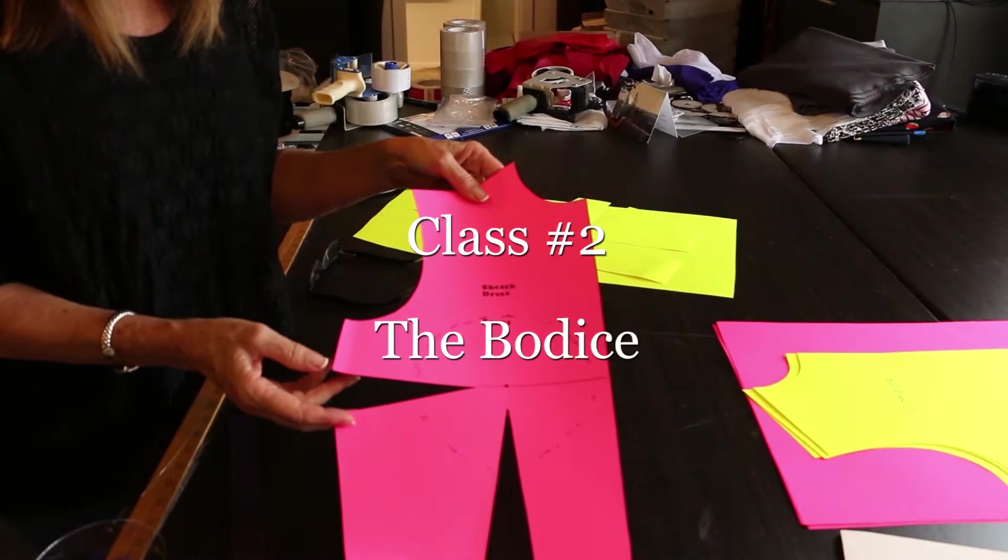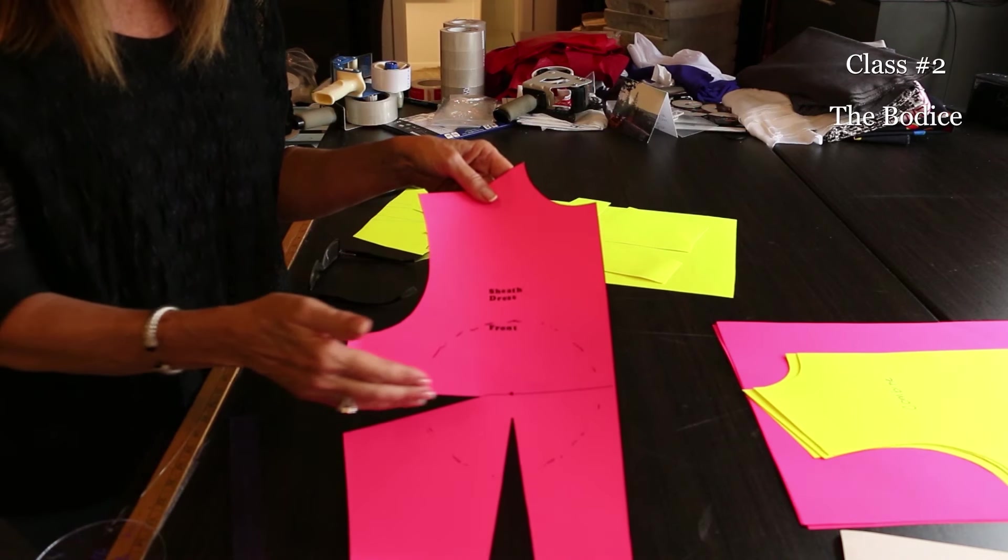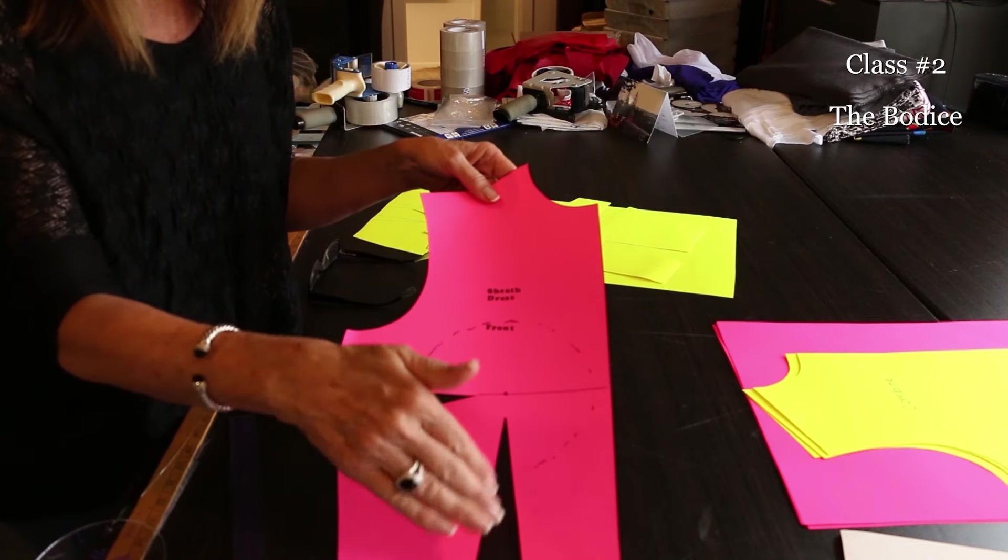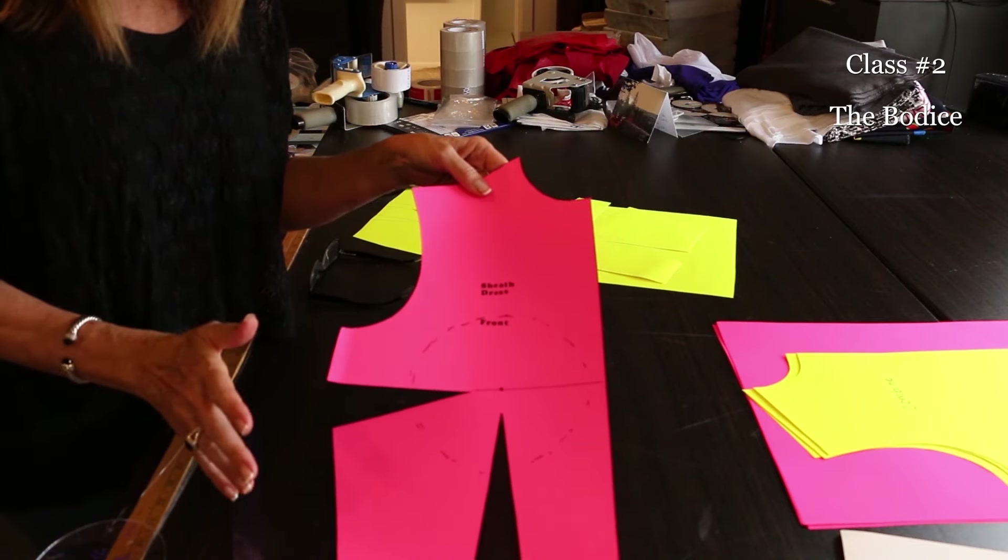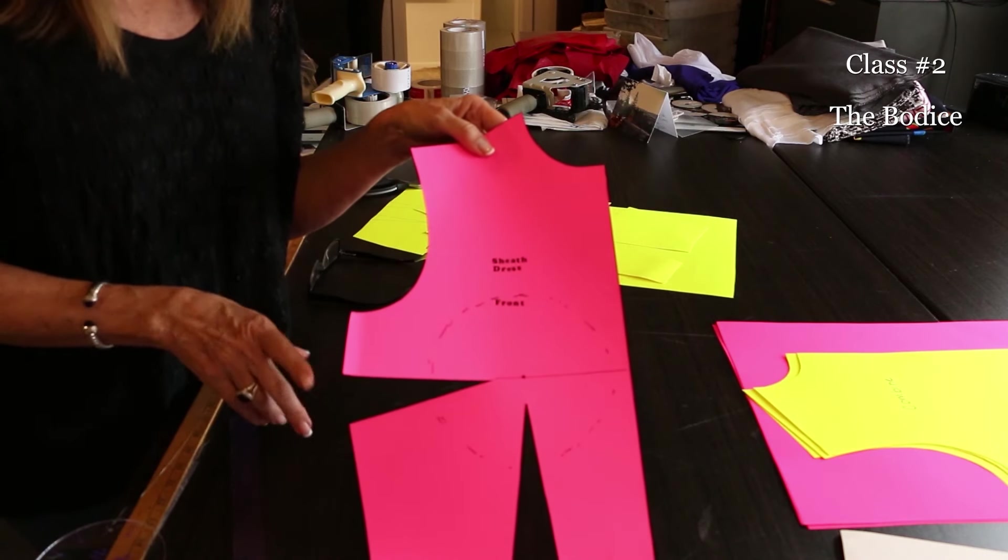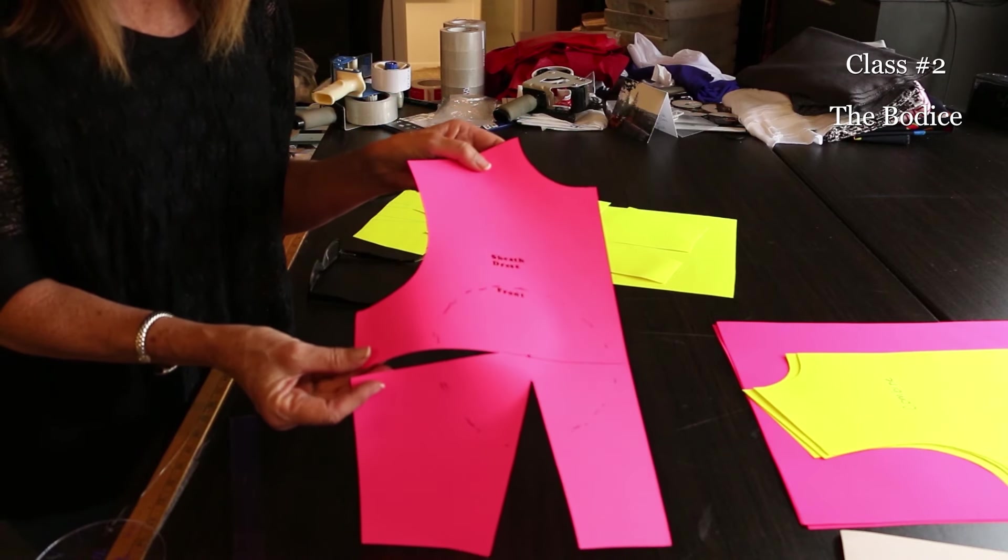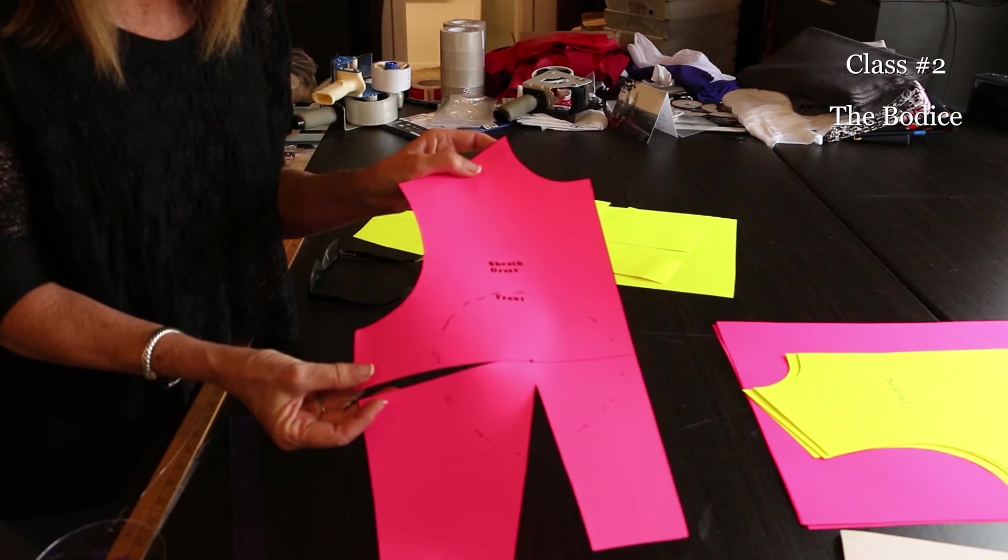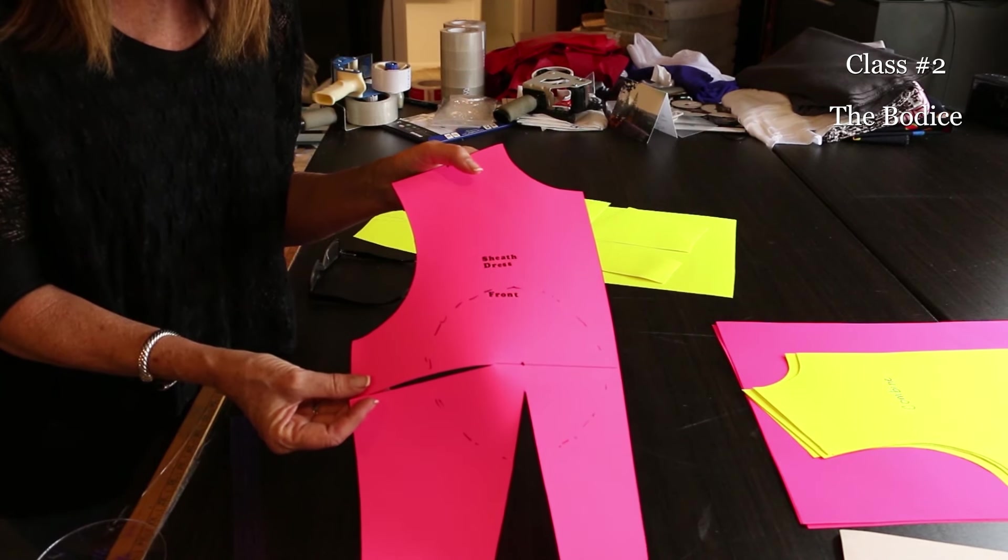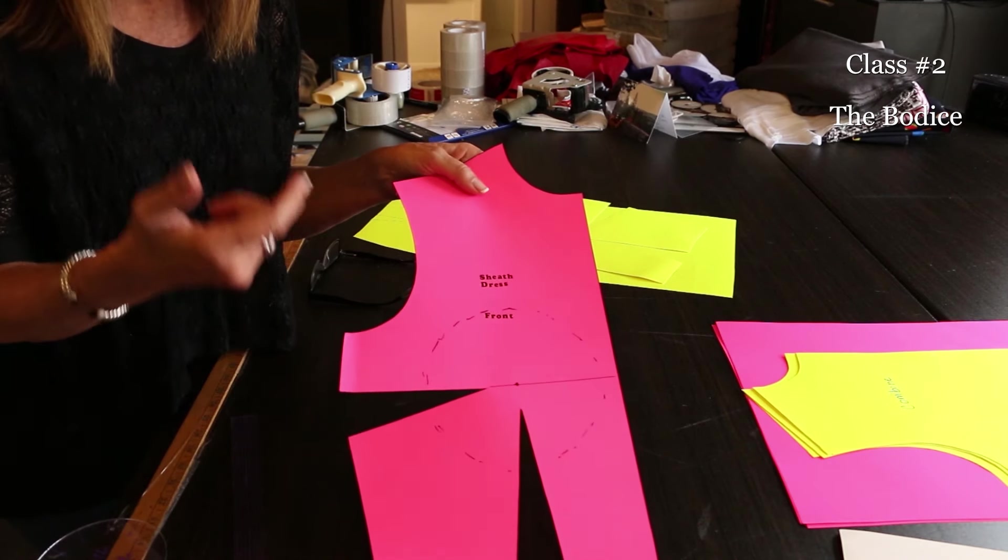What is important to understand is that horizontal darts affect length and vertical darts affect circumference. Another myth we often hear is that darts change circumference, but not all darts do. As you can see, this dart is not affecting circumference. Once I close it up, my circumference doesn't change at all. That's a very misunderstood point.